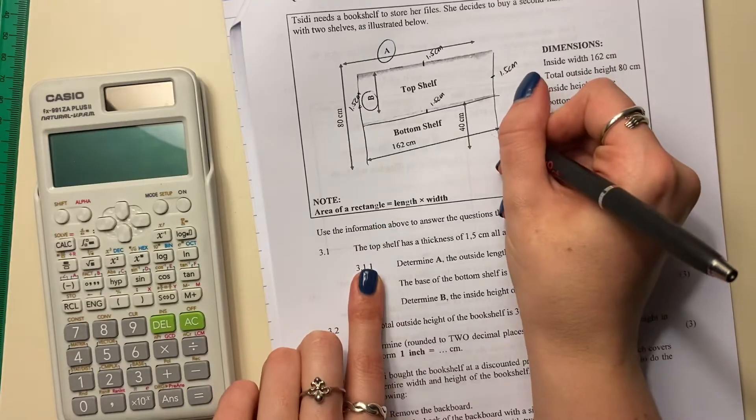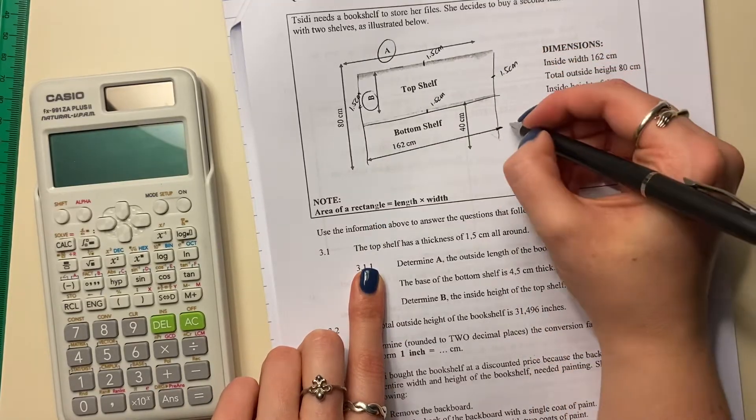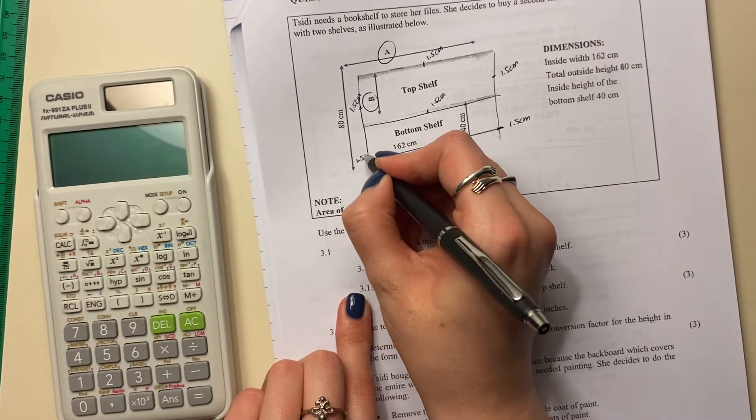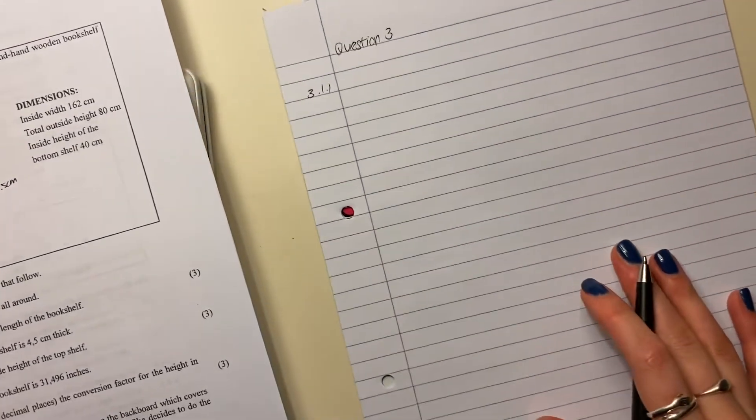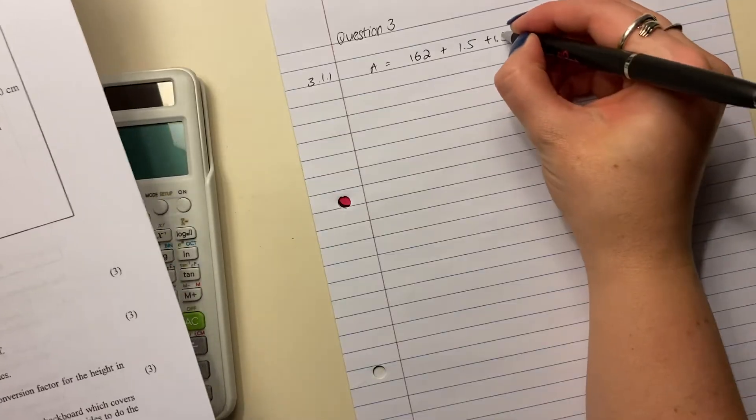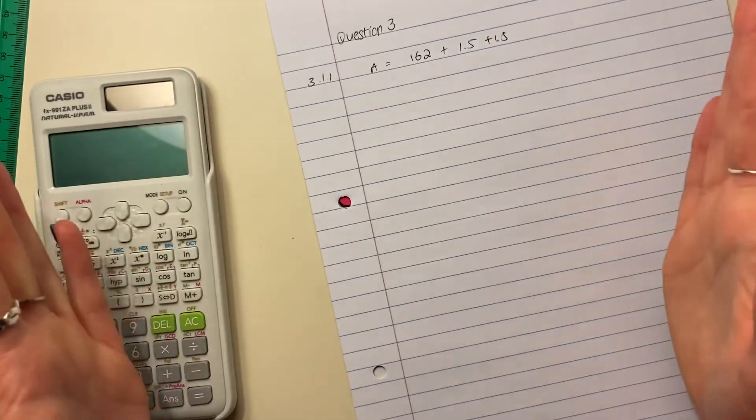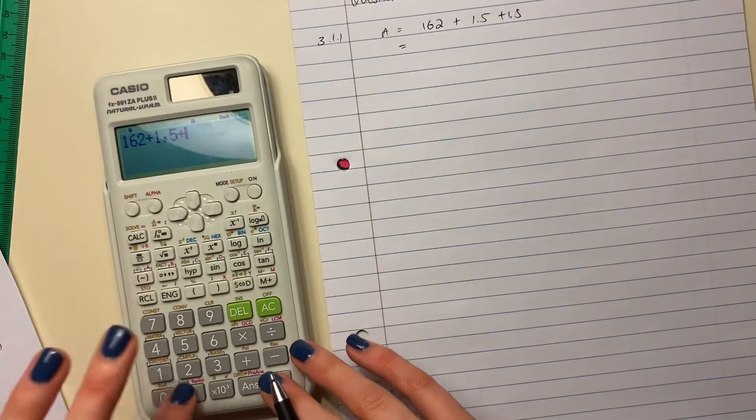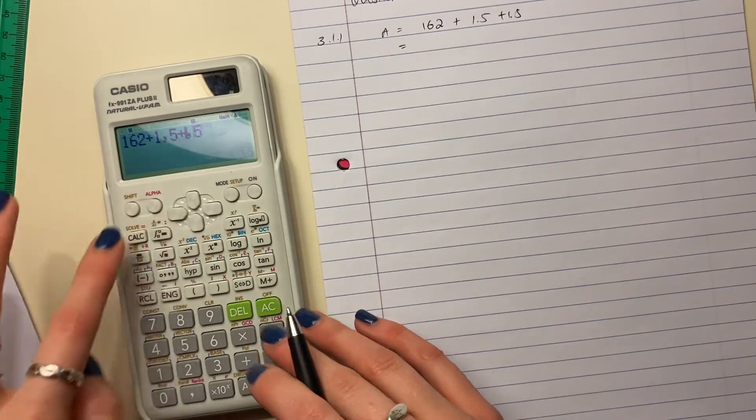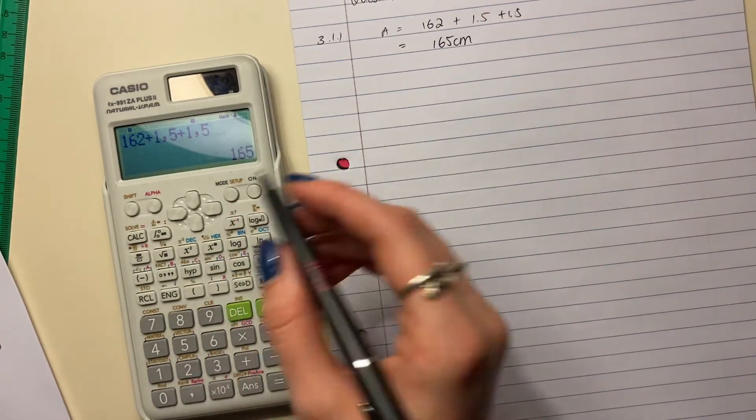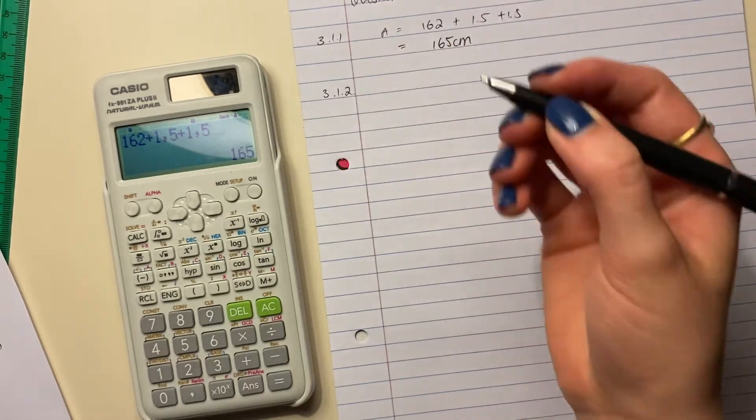Now on this side over here, it's going to be 1.5 centimeters to get to the outside from the inside to the outside. Same thing over here. So our length of A is going to be 162 plus 1.5 on this side, plus 1.5 on the other side. So basically, the thickness of the wood going from the inside to the outside. So 162 plus 1.5 plus 1.5, and the answer is 165 centimeters. So don't make calculator errors like me.